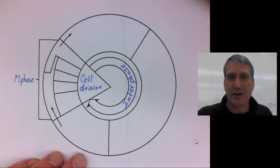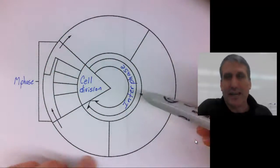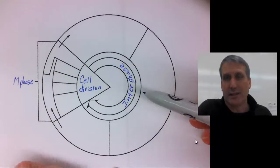The cell cycle are the stages that a cell goes through as it grows and divides.